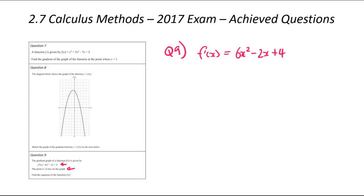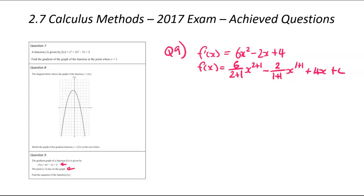When you're trying to find the original function, you must integrate. So f(x) — we integrate by taking the coefficient divided by the power plus one, then x to the power plus one. Doing the same for each term: coefficient divided by power plus one, x to the power plus one, plus 4x plus c. Simplifying: 6 divided by 3 is 2, so it's 2x³ minus x² plus 4x plus c.